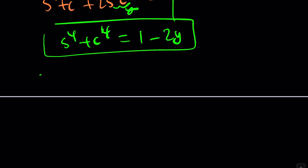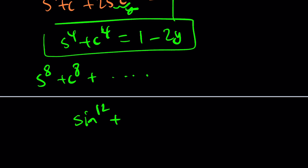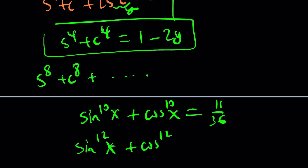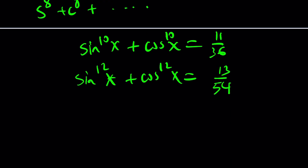This is a lot of work, but putting it all together: the problem gave us the sum of the tenth powers equal to 11 over 36, and the sum of the 12th powers — s to the twelfth plus c to the twelfth — works out to 13 over 54. Can you believe that?